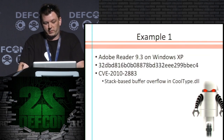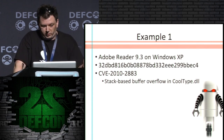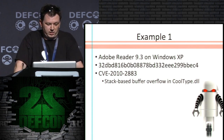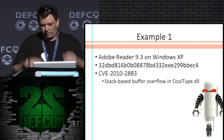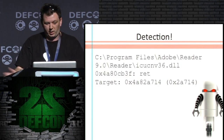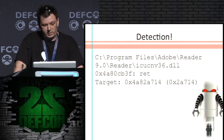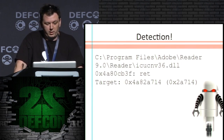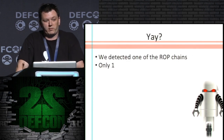Example one: Adobe 9.3 on Windows XP — this is an old exploit obviously. We run it, wave our hands, and voila, we have a detection. You can see the address where we're coming from and where we're going to. In the parentheses is the offset. We found one — that's really good, I was really happy.